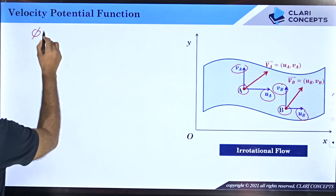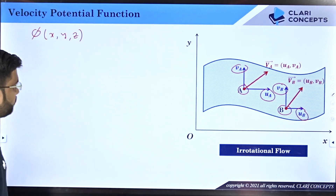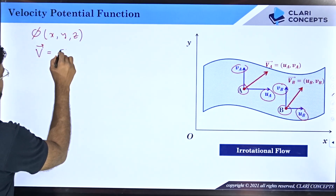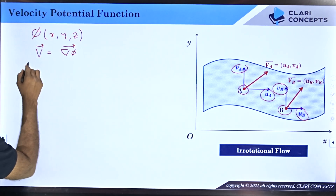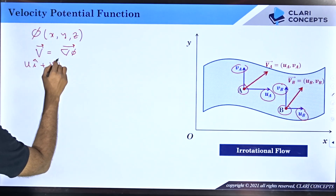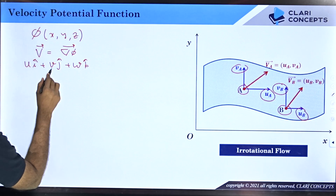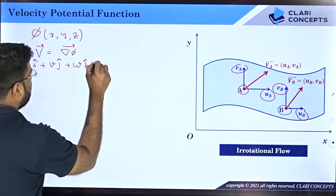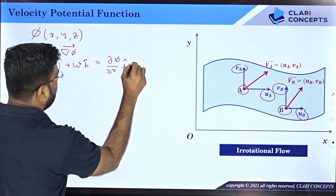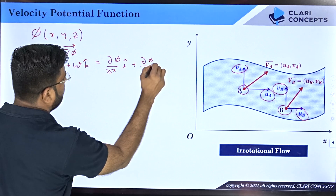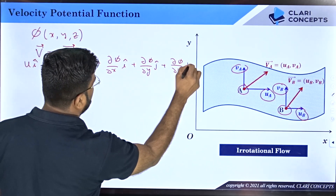The velocity potential function is symbolically represented by the symbol phi (φ). It is a scalar function of x, y, and z such that your velocity field is the gradient of this function φ. The velocity vector V equals u·i + v·j + w·k, and this equals ∂φ/∂x · i + ∂φ/∂y · j + ∂φ/∂z · k.